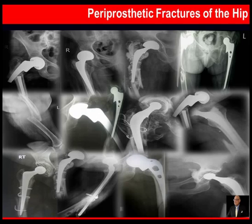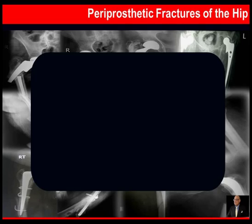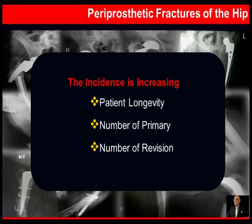Periprosthetic fractures can present in a myriad of ways and the incidence is seen to be increasing, largely because of patient longevity. These patients are living longer than ever before. The number of primary replacements is increasing and therefore the number of revisions is also increasing.